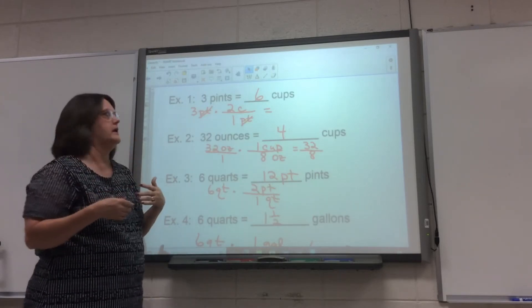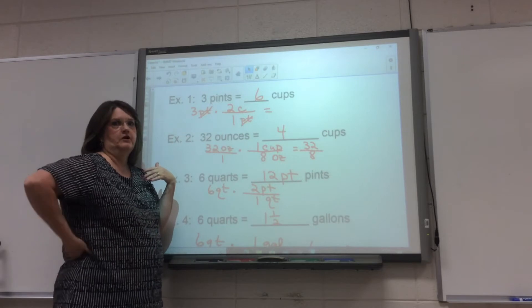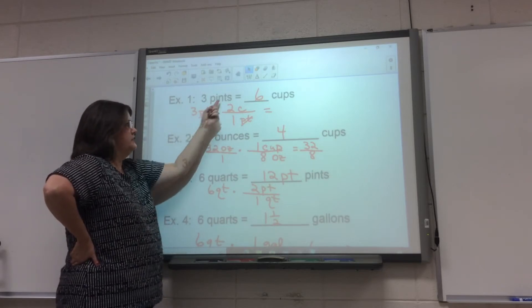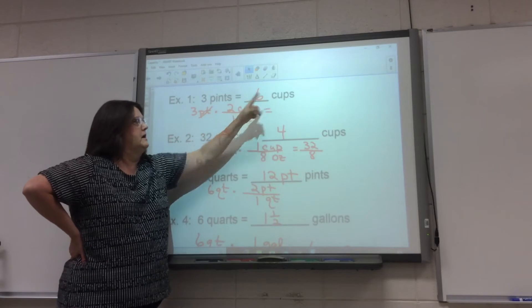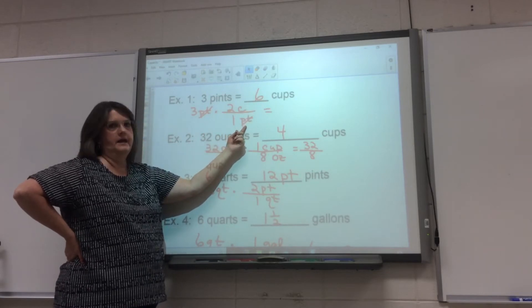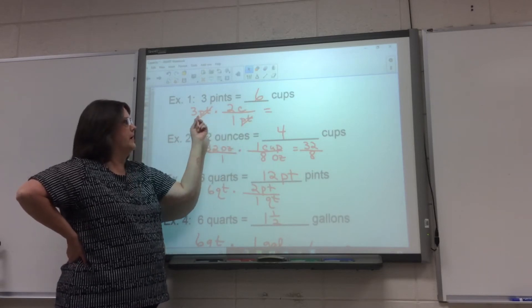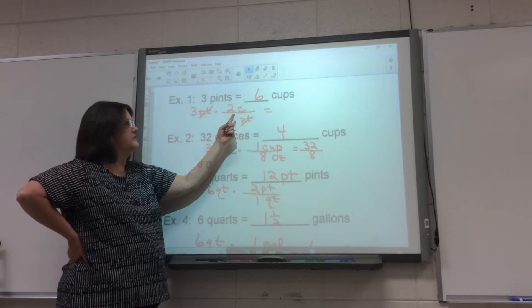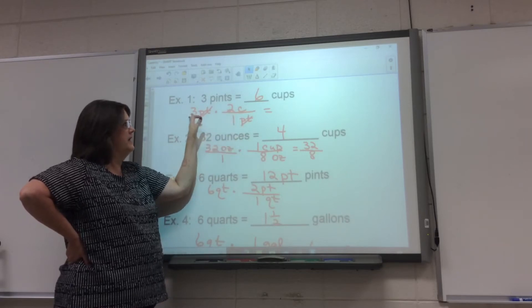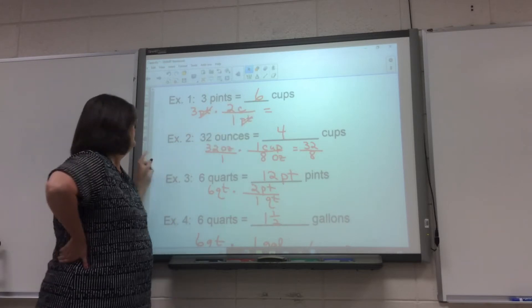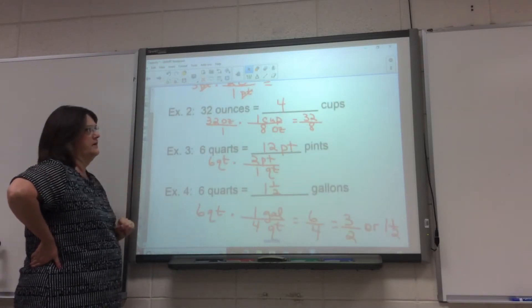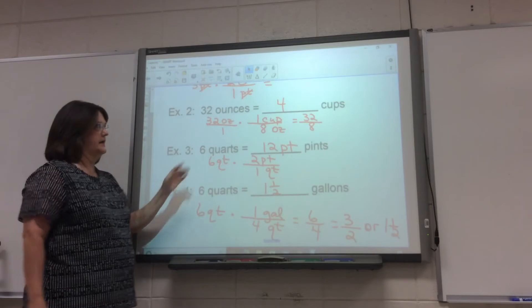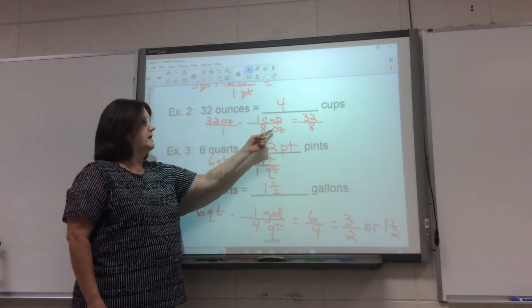Now I have these pre-done, it just made it easier for the video. So there are three pints that you're starting with, you want to know how many cups. So pints went in the denominator, cups within the numerator. I started with pints and wherever I'm headed is in the numerator. So there are two cups in a pint, three times two is six. Then I have 32 ounces and I want to know how many cups that is. So 32 ounces, eight ounces in one cup.